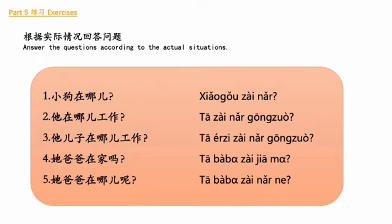Part 5, 练习, Exercise. 根据实际情况回答问题 — Answer the questions according to the actual situations. 一: 小狗在哪儿? 二: 它在哪儿工作? 三: 它儿子在哪儿工作? 四: 它爸爸在家吗? 五: 它爸爸在哪儿呢?